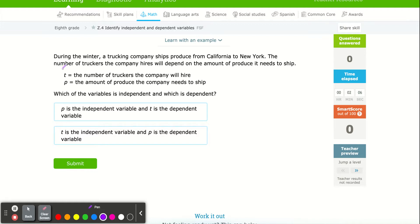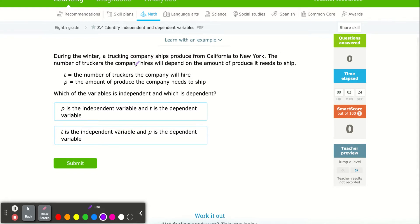And usually one of those numbers or variables depends on the other. And there's really no better way to explain this than just to start to dive in and understand what we're doing. So it says, during the winter, a trucking company ships produce from California to New York. The number of truckers the company hires will depend on the amount of produce it needs to ship.